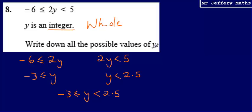Now we're asked to write down all the possible values of y. So we're saying that y is greater than or equal to negative 3, but is less than 2.5. So our potential whole numbers, integers, that y could possibly be is negative 3, negative 2, negative 1, 0, 1, and 2.